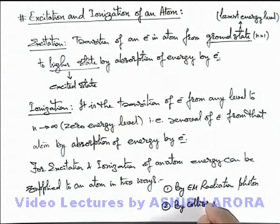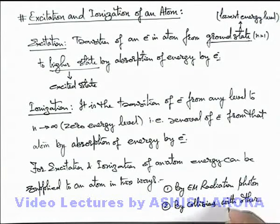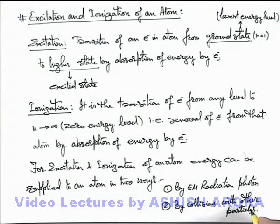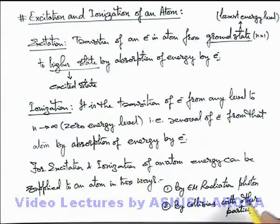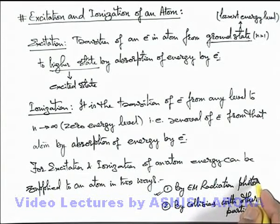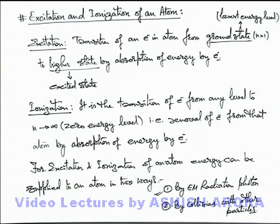The other way is by collisions with other particles. When different particles collide with an atom, they may supply some energy during the collision while the transfer of momentum takes place. And if that energy is sufficient enough for excitation or ionization, both of these phenomena may take place. First we'll start with electromagnetic radiation photon supply of energy, and later we'll discuss the collision phenomena also.